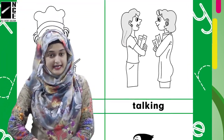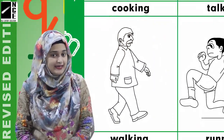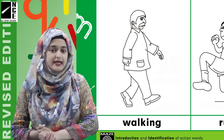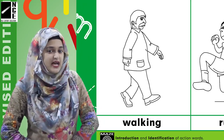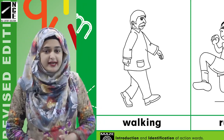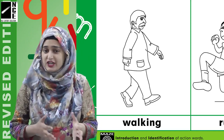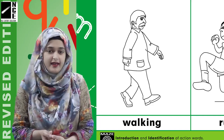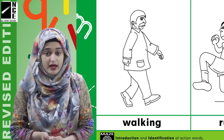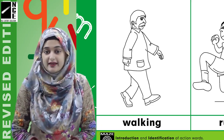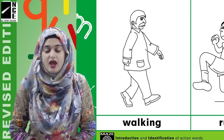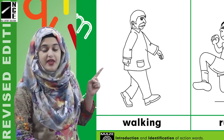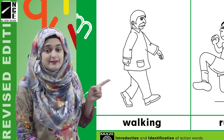The next picture is of a man, and in ke posture se kuch aisa lag raha hai ki ye chal rahe hai. Ab zahir hai is tarah se koi khada to reh nahi sakta. So yeh chal rahe hai, aur jab hum chal rahe hote hai, hum us action ko kya kehte hai — we call it walking. Read after me: walking. This man is walking.